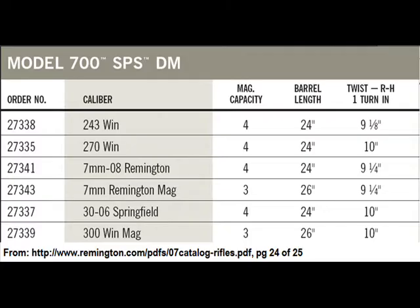Here's a Remington 700 rifle — a fairly common firearm. It has a 26 inch barrel, so you'll get a little bit better performance with the extra barrel length to keep pushing the bullet. It also has a 1-in-10 twist, meaning the bullet will rotate one full revolution in ten inches.